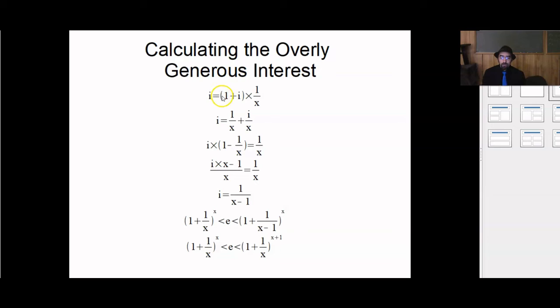So we have to calculate this slightly overly generous interest. We say i = (1 + i). The interest equals the final amount. If we assume $1 of principal, then the final amount will be $1 plus the interest. We say if our time width is that 1/x, we'd say i = (1 + i) × 1/x. This gives us the simple equation: i = 1/x + i/x. Move the i/x to the other side, so we want to isolate for i. i - i/x = 1/x. That gives us i × (1 - 1/x) = 1/x.